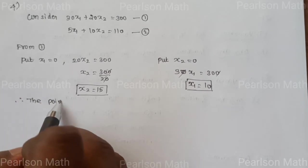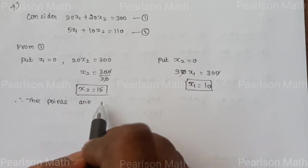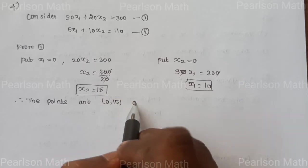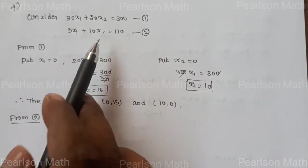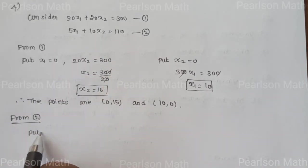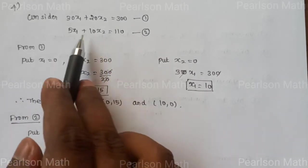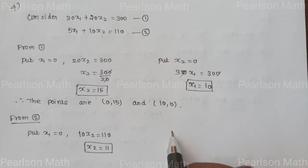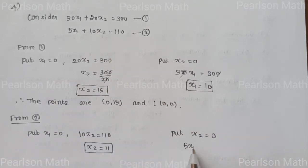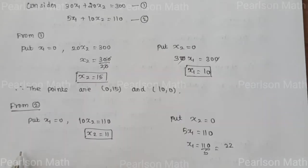At the time x₂ equals 0 in the first equation, 30x₁ equals 300, so x₁ equals 10. Therefore, the points are (0, 15) and (10, 0). Now for the second equation, put x₁ equals 0, then 10x₂ equals 110, so x₂ equals 11.